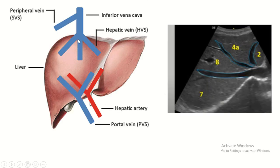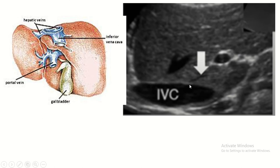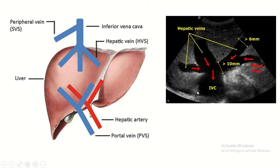Now for the sonographic hepatic vasculature — when we scan here we find the inferior vena cava and three branches of the hepatic vein: the right hepatic vein, middle hepatic vein, and left hepatic vein. Notice that the wall of the inferior vena cava is not echogenic, and similarly the wall of the hepatic vein is not echogenic.